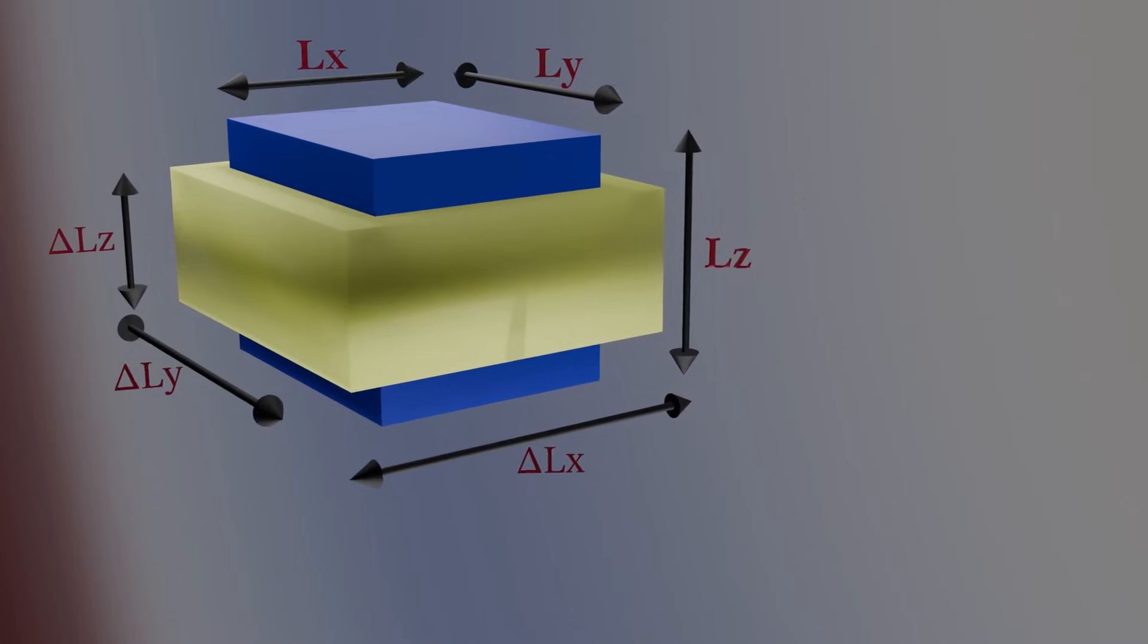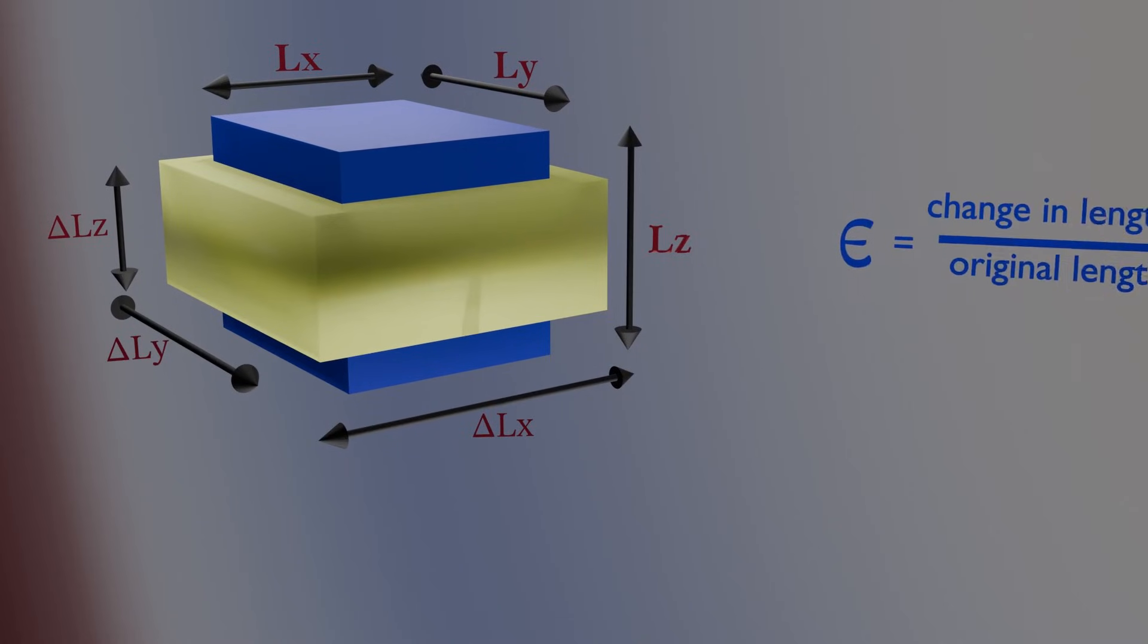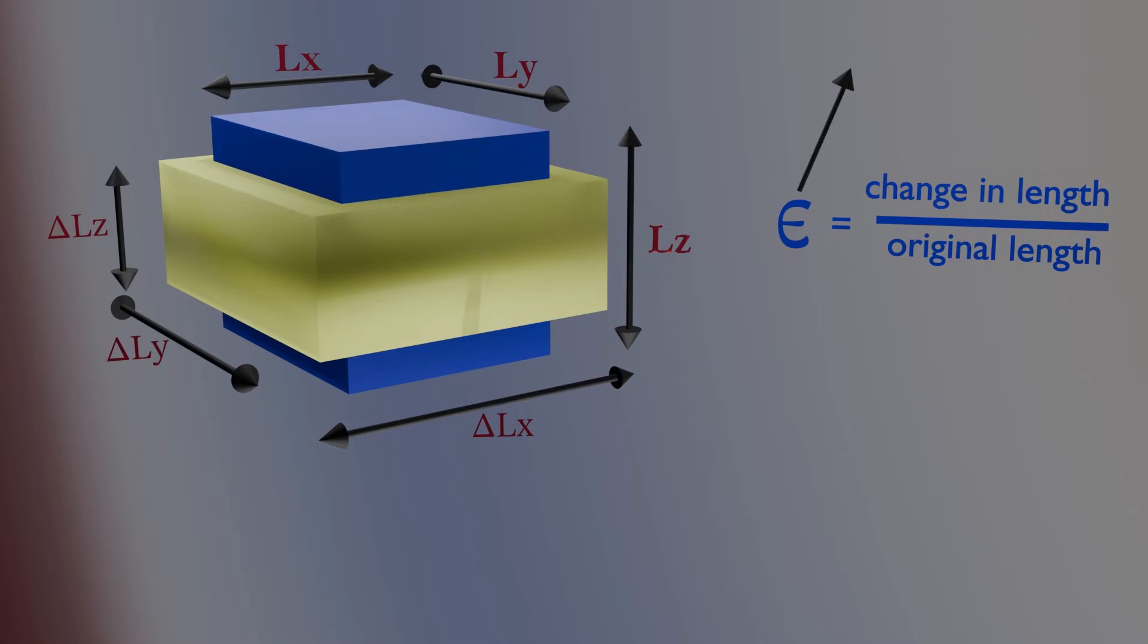Next, we can write an equation for the strain in any direction. Strain is simply the change in length divided by the original length of the object. We use the symbol ε to represent strain.